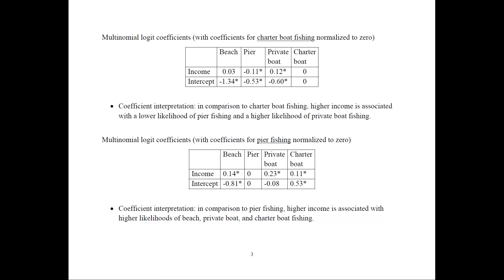Now we can estimate the same model and this time normalize the coefficients of pier fishing to zero. In comparison to pier fishing, higher income is associated with higher likelihoods of beach, private boat, and charter boat — meaning people with higher income are more likely to fish somewhere other than the pier. Notice that you cannot interpret the magnitude of those coefficients; interpretations always have to be in reference to the base category.